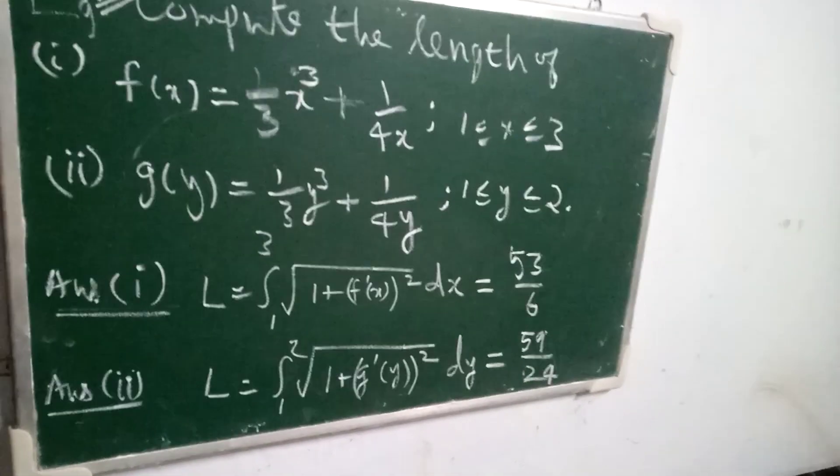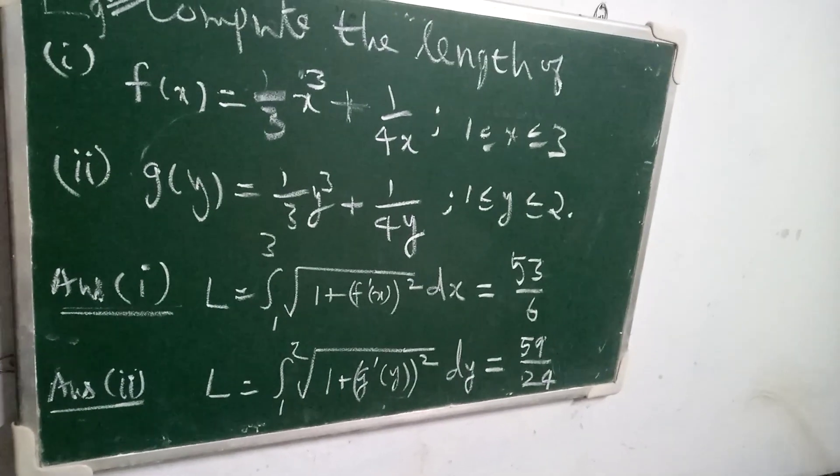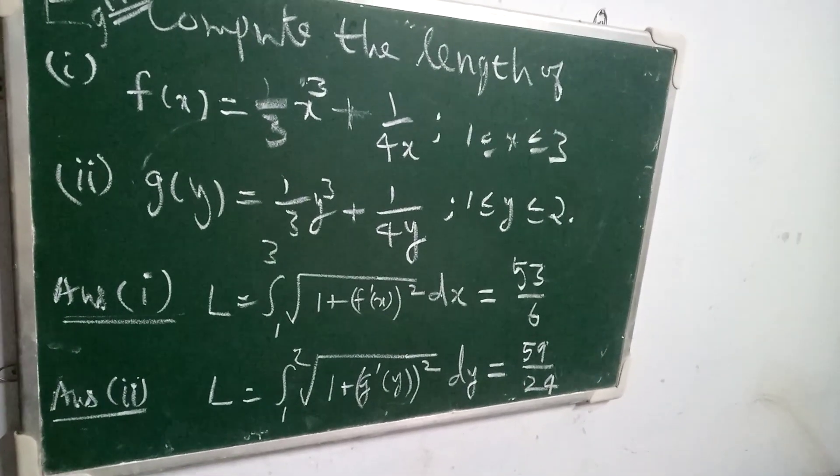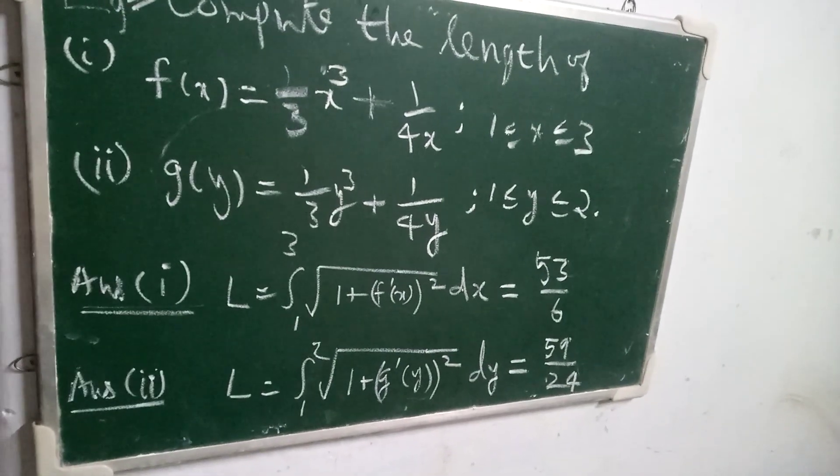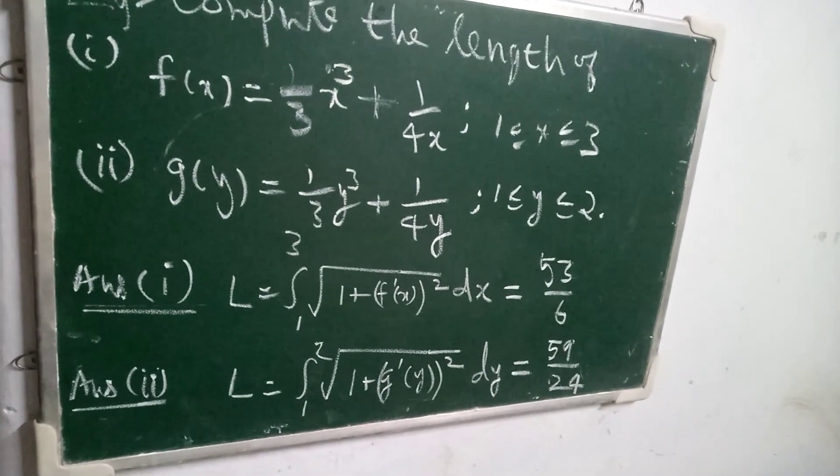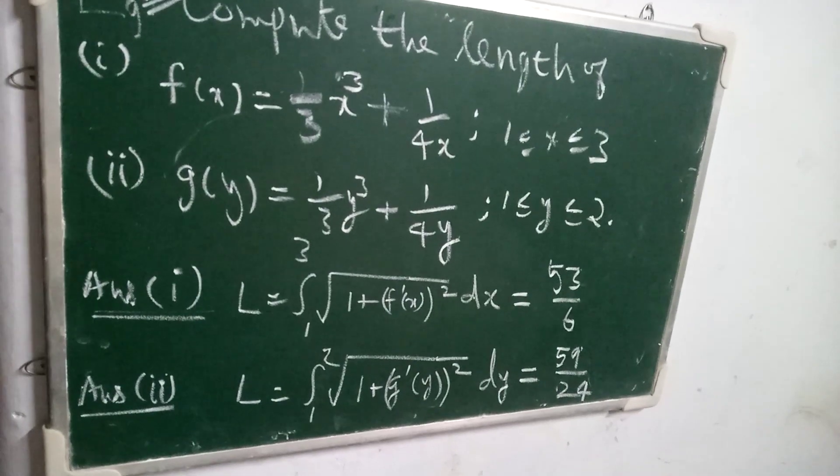So for the first problem, you have to use length equals integral from a to b of square root of 1 plus (f'(x))² dx. Evaluate and you will get 53/6.